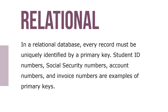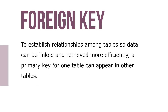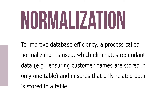In relational databases, every record must be uniquely identified by a primary key. Student ID numbers, social security numbers, account numbers, and invoice numbers are examples of primary keys. To establish relationships among tables so data can be linked and retrieved more effectively, a primary key for one table can appear in other tables. A process called normalization eliminates redundant data — like ensuring customer names are stored in only one table — and ensures that only related data is stored in a table.